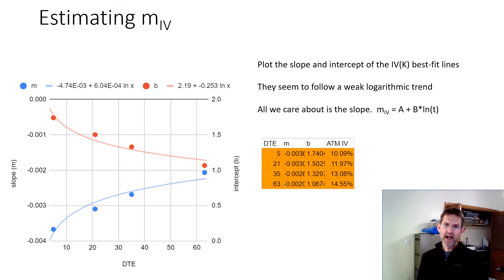So now let's plot the slope and intercept of these best fit lines versus time. And we've done that here. If you look at the points, maybe they're linear. I find that they're usually there's a bit of a logarithmic trend. They tend to blow up a little bit as you go toward expiration.